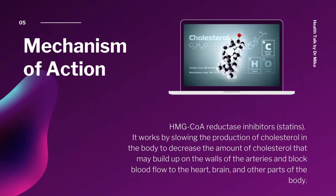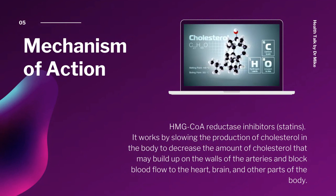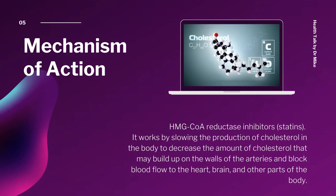What is the mechanism of action of this medication? This medication blocks or inhibits the HMG-CoA reductase, which is part of the cholesterol metabolism, which most statins do. It works by slowing the production of cholesterol in the body to decrease the amount of cholesterol that may build up on the walls of the arteries and block the blood flow to the heart, brain, and other parts of the human body.